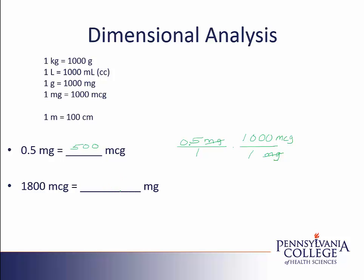For the second example, we'll start with the given information over a placeholder 1 to set it up as a dimensional analysis problem. This time, I want to cancel the label of micrograms, so I'll need that on the bottom of my fraction. Looking at my conversion, it takes 1,000 micrograms to make 1 milligram. The label of micrograms cancels, and I take 1,800 divided by 1,000 to get 1.8 milligrams. Note that these two problems use the same memorized conversion — within the dimensional analysis setup, we always arrange the problem so the labels cancel, using the conversion as 1,000 over 1 or 1 over 1,000, whichever is needed.